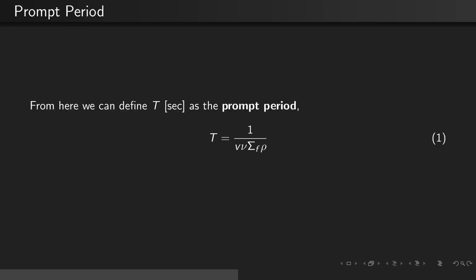From here, we can define the prompt period, T, which has units of seconds, as 1 over v nu sigma f rho.